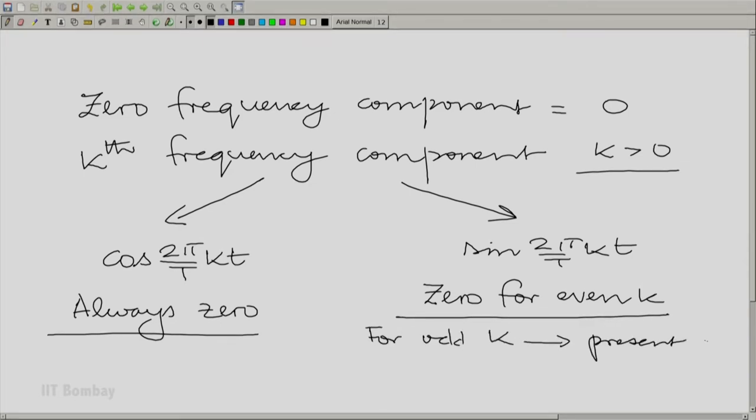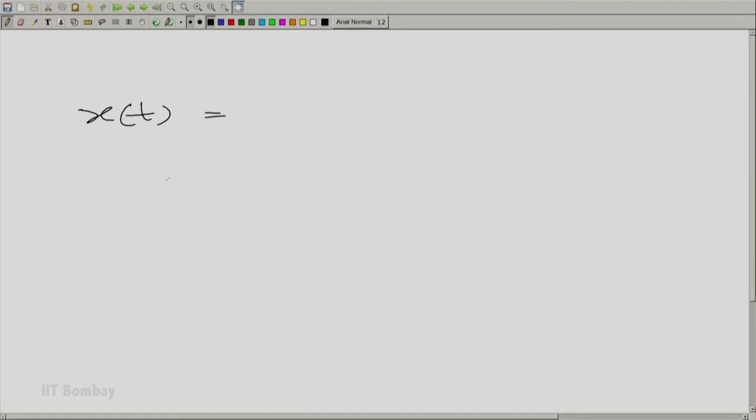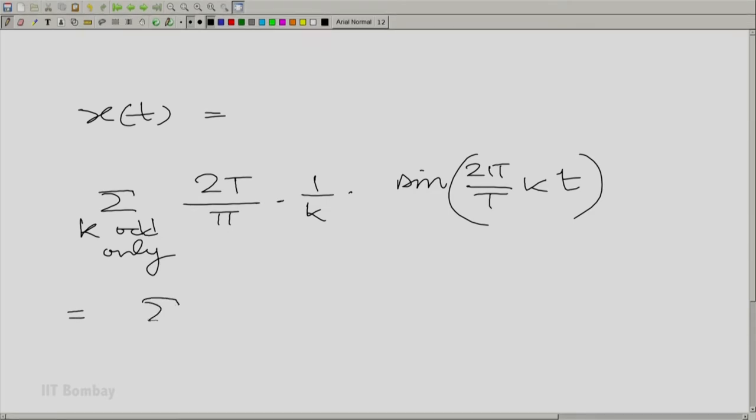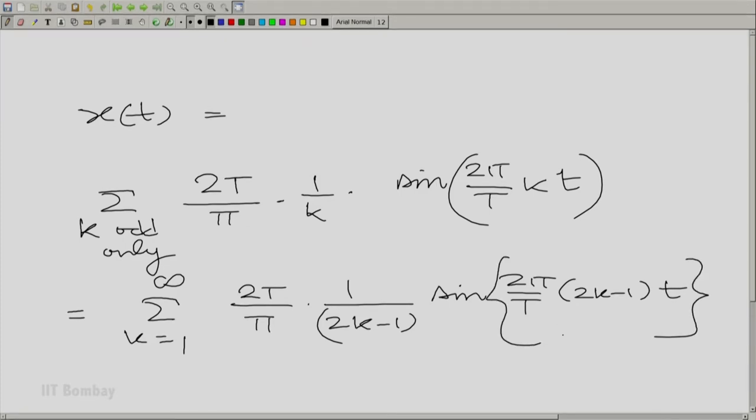Therefore we wrote down the overall expression: x(t) is only a sum of odd components which are essentially (2T/π) · (1/k) · sin(2π/T · kt) summed over k odd. That of course, we could write down as summation k going from 1 to infinity, (2T/π) · (1/(2k-1)) · sin(2π/T · (2k-1) · t).